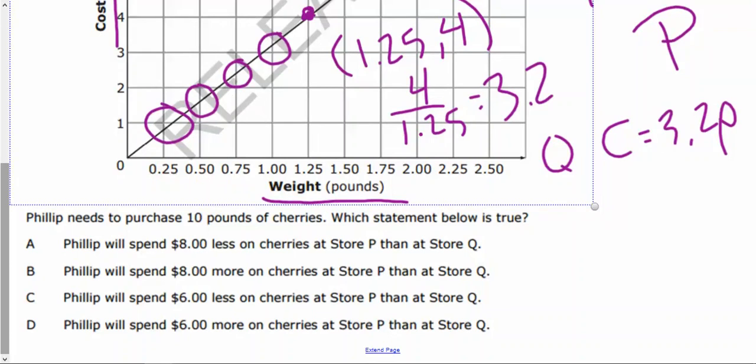So, we know that for store Q, it's going to be the cost is 3.2 times the number of pounds, or $3.20 per pound. So, now it says, Philip needs to purchase 10 pounds of cherries. So, let's calculate how much each one of those would be in our respective store. So, for store Q, cost would be 3.2 times 10. So, it would cost $32. And store P, it would be 3.8 times 10, which gives us $38. So, I know P is going to be more expensive. So, this first one says, we'll spend $32 less at store P. That's not true. We'll store $6 less. That's not true. So, now we have to look at B or D. So, what we find is that it would cost him exactly $6 more at store P. So, cherries cost $38 at store P, $32 at store Q. So, our answer is B.